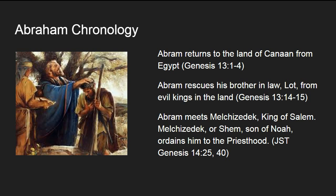Because of this, Abram flees and returns to the land of Canaan from Egypt. He rescues his brother-in-law Lot from the evil kings in the land, and we learn of many wars and many attempts against Abram's life to kill him. It's during this time that Abram meets Melchizedek, who is the king of Salem. We know that Melchizedek, or Shem, is the son of Noah, and he actually ordains Abram to the priesthood. You can read about that in Joseph Smith's translation of Genesis 14.